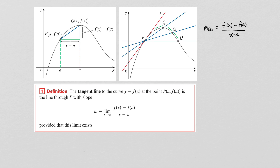From earlier lessons, we've talked about the slope of a secant line through two points on a function. Let's imagine we have a function f of x. Point P is a fixed point with coordinates (a, f(a)), and point Q is some other point on the function with coordinates (x, f(x)). The slope of the secant line is f(x) minus f(a) divided by x minus a.